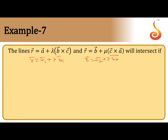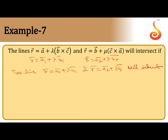We have the property: two lines r̄ = a1 + λb1 and r̄ = a2 + λb2 will intersect if the scalar triple product [a2 - a1, b1, b2] = 0. Equivalently, (a2 - a1) · (b1 × b2) = 0. This is the property we will apply here.